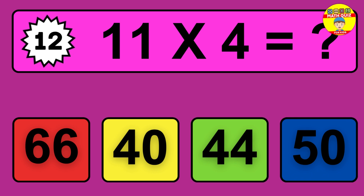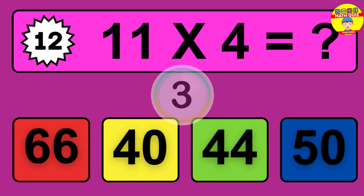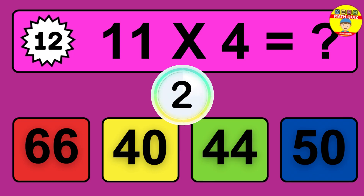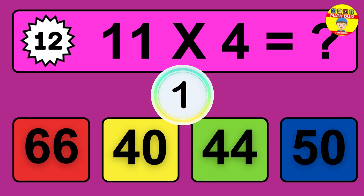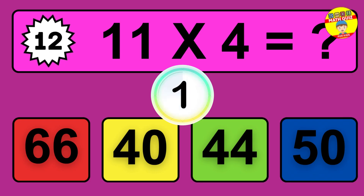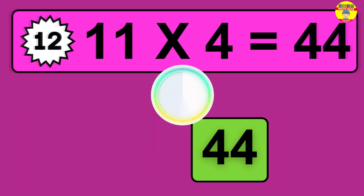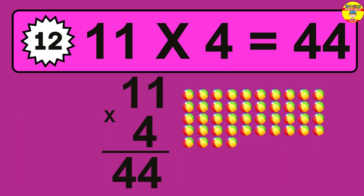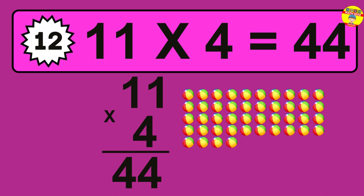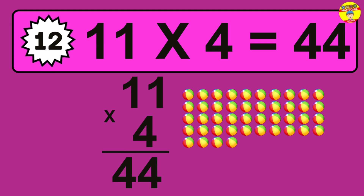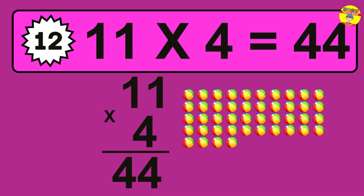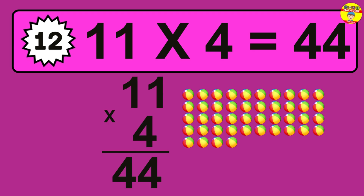Question twelve: 11 times 4 equals what? The answer is 11 times 4 is 44. To calculate, we have 11 groups with 4 balls each. So how many balls do we have? 44 balls.